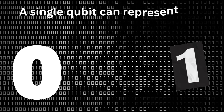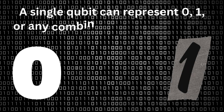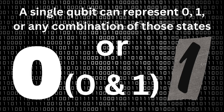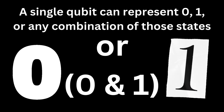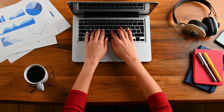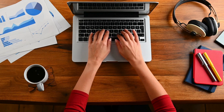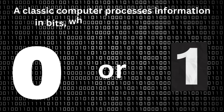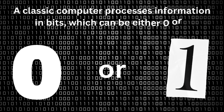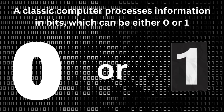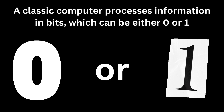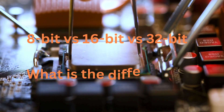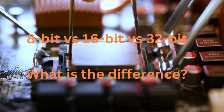A single qubit can represent zero, one, or any combination of those states, thanks to the principles of quantum mechanics. A classic computer processes information in bits, which can be either zero or one. Let's look at how traditional computing power stacks up against quantum computing power using 8-bit, 16-bit, and 32-bit examples.